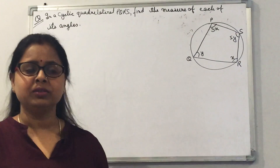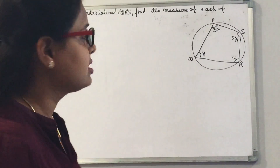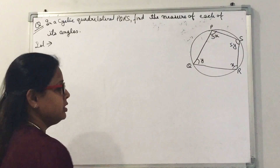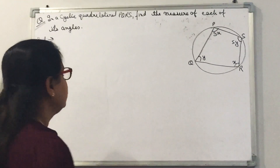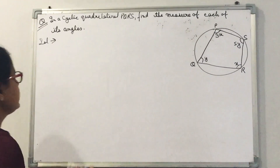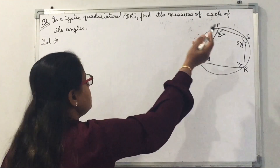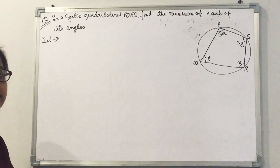Hello everyone, this is Guriyar Ron here and you are watching Donatatoes. Today we are going to solve a question from the viewers section. The question is: in a cyclic quadrilateral PQRS, find the measure of each of its angles.